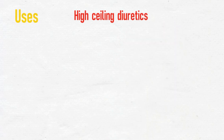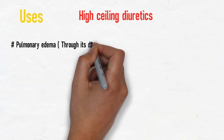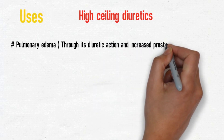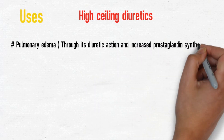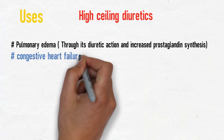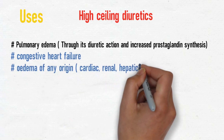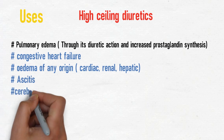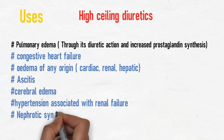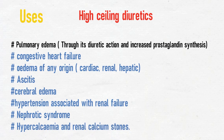The uses of high efficacy diuretics include: pulmonary edema, which is the most common indication; congestive heart failure; edema of any origin — cardiac, renal, or hepatic; ascites; cerebral edema; hypertension associated with renal failure; nephrotic syndrome; and hypercalcemia and renal calcium stones.